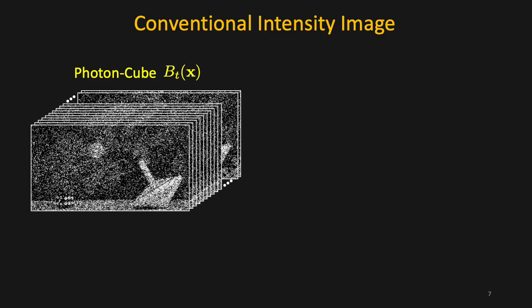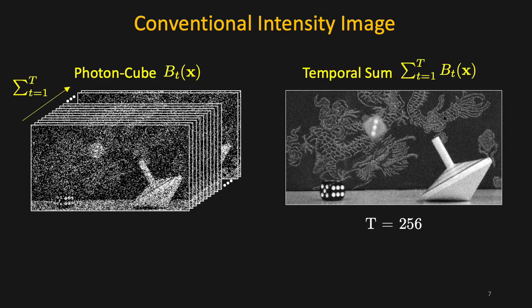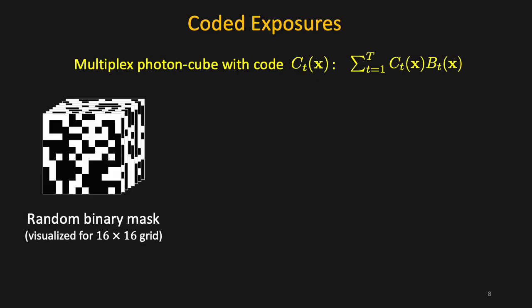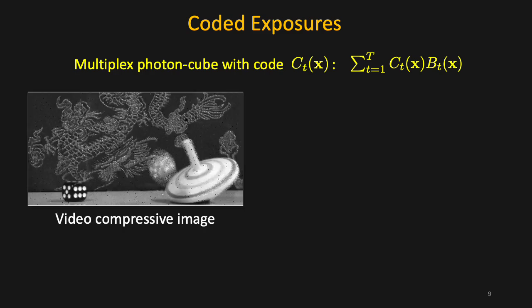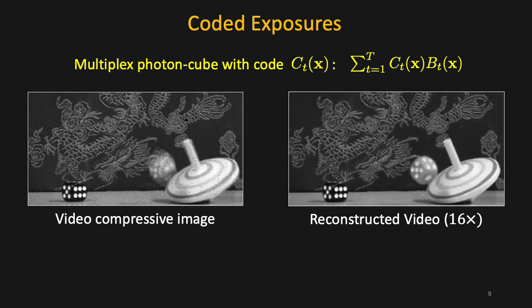A simple example of a photon cube projection is the sum of binary frames. This emulates a conventional intensity camera. We can also multiplex binary frames resulting in a coded exposure. For instance, by multiplexing with random binary masks, we can get a video compressive image. A compressive capture can recover video frames from a single image.